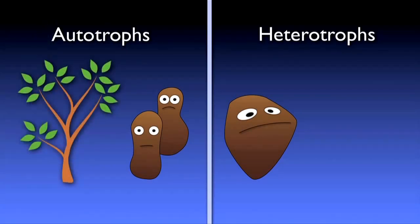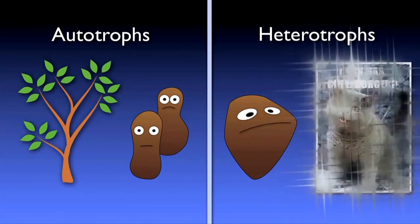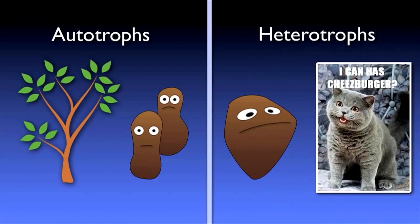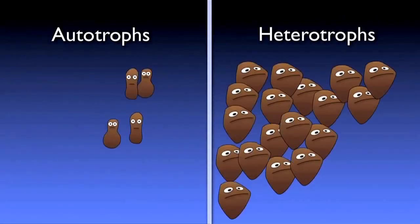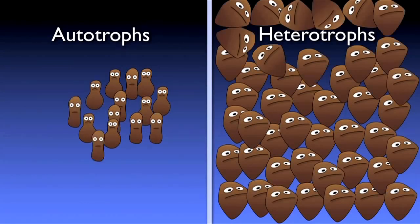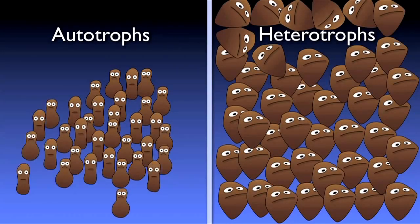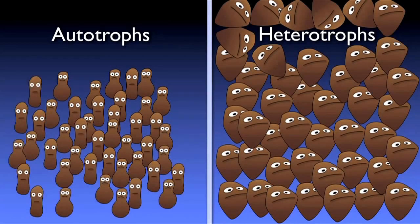Heterotrophs, on the other hand, require organic sources of carbon — essentially, they get carbon by consuming other organic compounds, with humans and animals being good examples. In contrast to heterotrophic BOD-consuming bacteria, autotrophic nitrifiers require more time to mature and maintain their population in a biological wastewater treatment system.